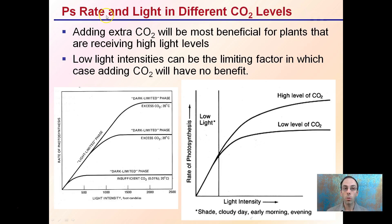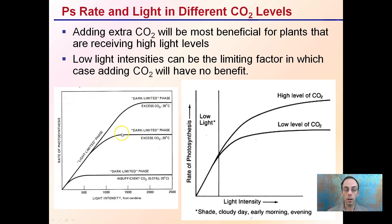Photosynthesis — PS — and light at different carbon dioxide levels: adding extra CO2 will be most beneficial for plants receiving high light levels. At low light levels, higher or lower CO2 really doesn't make any difference. However, once you increase light intensity, low CO2 levels off at a much lower rate of photosynthesis, while higher CO2 increases the photosynthetic rate. Low light intensities can be a limiting factor — if you're adding CO2 at low light, there's going to be really no benefit. Higher light levels with higher CO2 levels can result in an increased rate of photosynthesis, assuming water and nutrients are all above optimum.